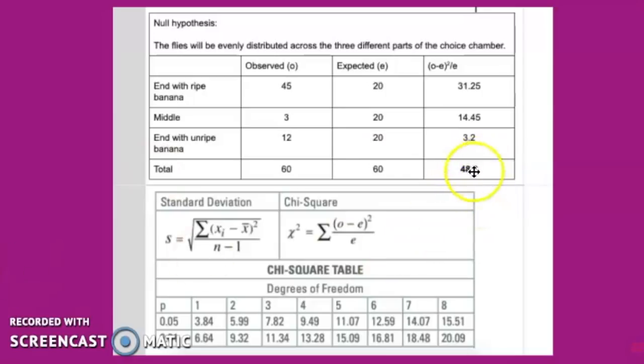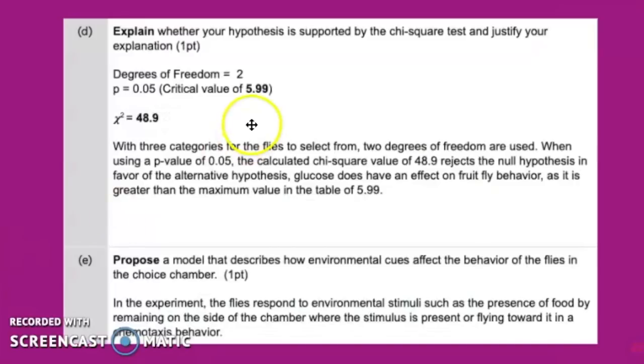If you get a value that's way higher than your critical value in your chi-square, normally that is okay. So is our hypothesis supported? When using a p-value of 0.05, the calculated chi-square value of 48.9 rejects the null hypothesis as it is greater than the maximum value in the table of 5.99. You can pause this and take a look at some of the other parts of the question, but we're going to move forward with our review.